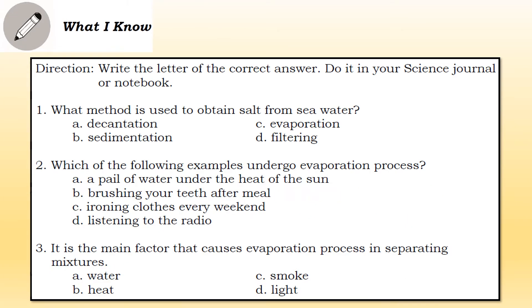Before that, let me check what you have already learned about evaporation from your previous years of study. You have to write the letter of the correct answer. Number one: What method is used to obtain salt from sea water? A) Decantation, B) Sedimentation, C) Evaporation, D) Filtering.